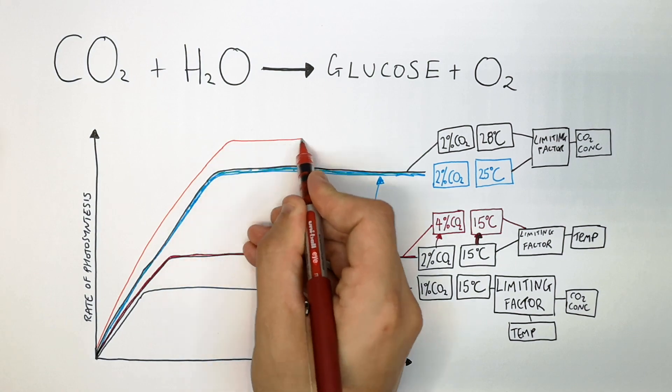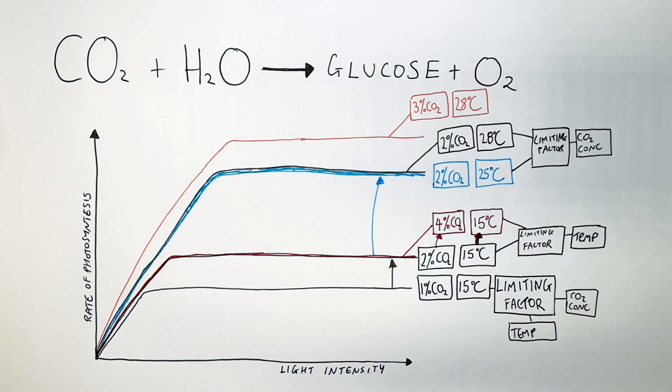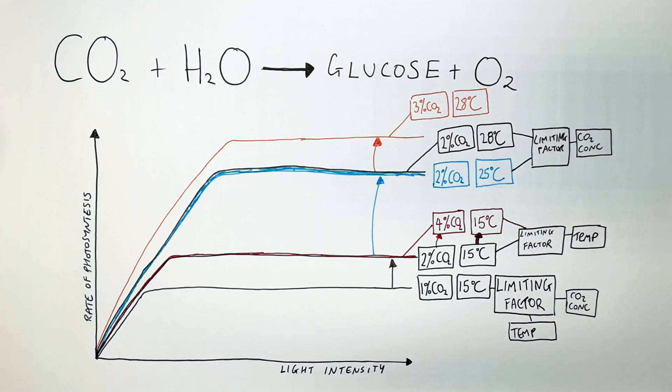Now we're growing the plant at 3% carbon dioxide and 28 degrees Celsius. The rate of reaction for photosynthesis has gone up.